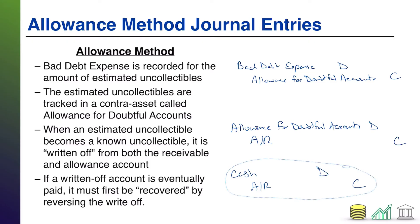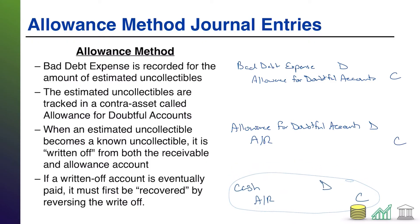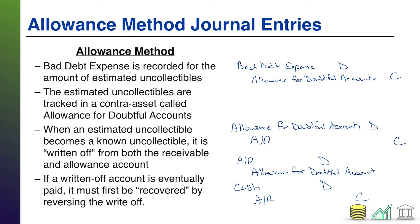The way you solve this is you essentially reverse the write-off. Debit AR to put the AR back on the books, credit allowance for doubtful accounts to put the estimate back on the books. We're essentially taking the write-off and reversing it — flip-flopping it and undoing the write-off.